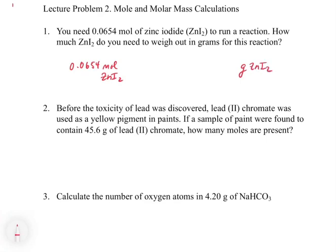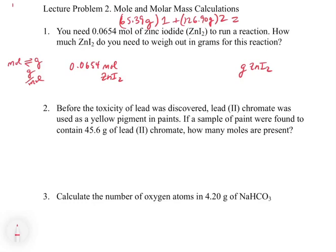This is going to be a moles-to-grams calculation, so we need the molecular weight in grams per mole. Let's get the molecular weight by adding up all the components of zinc iodide. From the periodic table, zinc is 65.39 grams — there's one of them, so multiply by one. Then add the mass of iodine, which is 126.90 grams, and there are two of them, so multiply by two. So 65.39 times 1 plus 126.90 times 2 equals 319.9 grams per mole. Now we have the unit conversion needed to go between moles and grams.